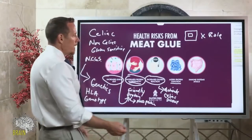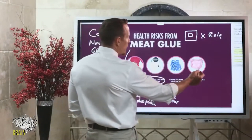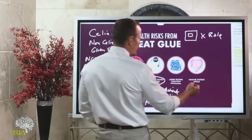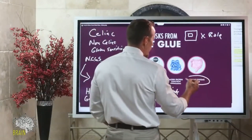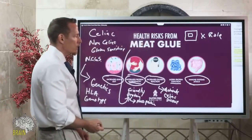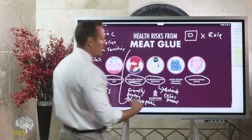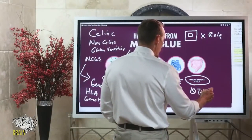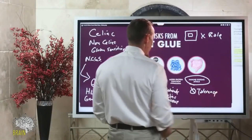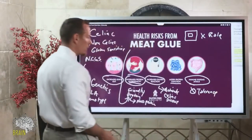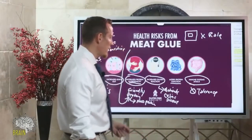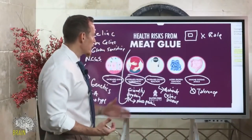We also know that meat glue itself, as a foreign entity, can contribute to your immune system attacking it. There's a process called loss of tolerance, and this is part of how that happens — you lose tolerance to it, and so your immune system, instead of looking at it as food, actually starts to attack it.